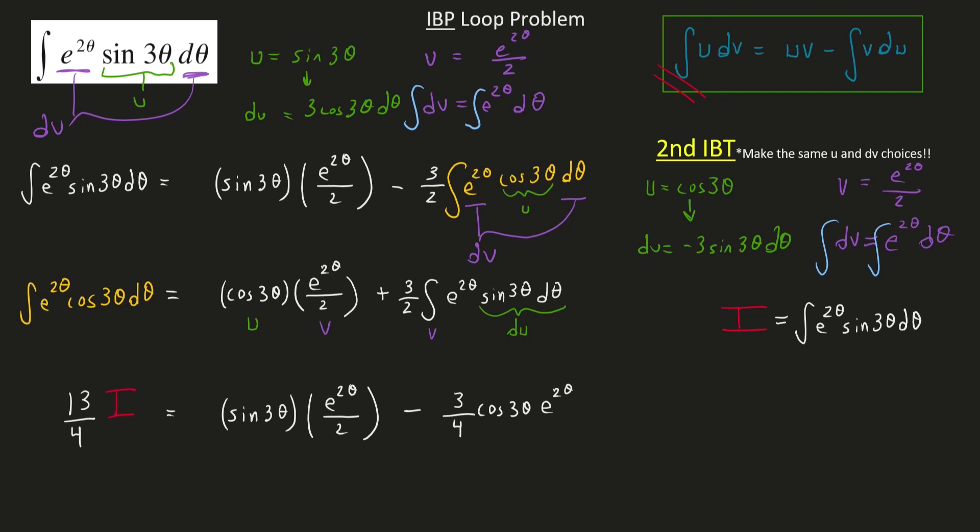And to get i by itself, I just have to now multiply both sides of the equation by 4 over 13.